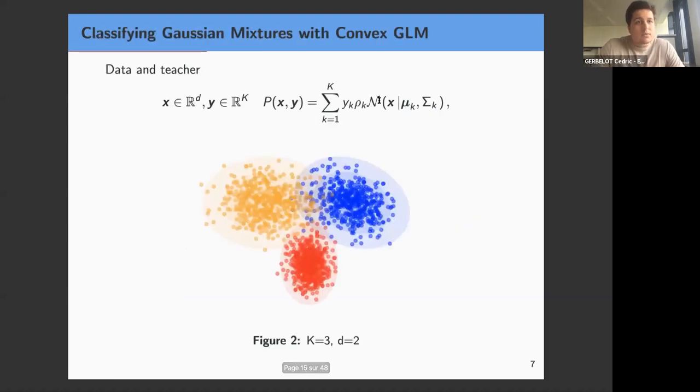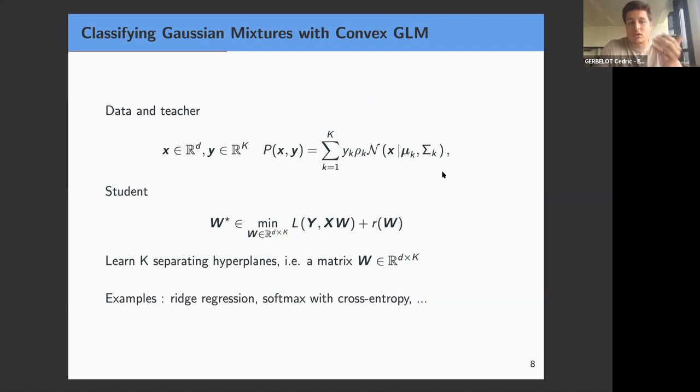Let's go. The data distribution that we chose is the generative model which implicitly defines the teacher in this teacher-student framework. It's a gaussian mixture model so I have data points x in r to the power d, one hot encoded labels y in r to the power k, and a joint distribution with rho k the probability for the clusters and the gaussian densities parameterized by generic means mu k and covariances sigma k. Here is a familiar picture for three clusters in dimension two and the goal is to try to learn this gaussian mixture, learn separators using a convex generalized linear model. This time instead of learning just a vector we are learning k separating hyperplanes so we are learning a matrix w in r d times k. Examples includes for example ridge regression, soft max with the cross entropy, any loss and regularizer as long as it is convex, otherwise we don't have the solution.